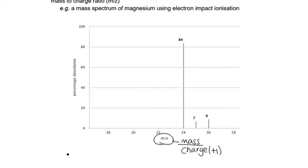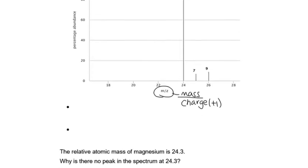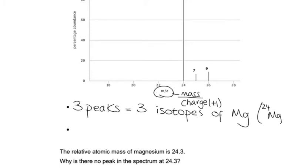The first question I would ask you is how many isotopes are there of magnesium? Remember that isotopes are atoms of the same element with a different mass number. We can see that we've got three peaks, so there are three isotopes of magnesium. Those isotopes are 24Mg, 25Mg and 26Mg.